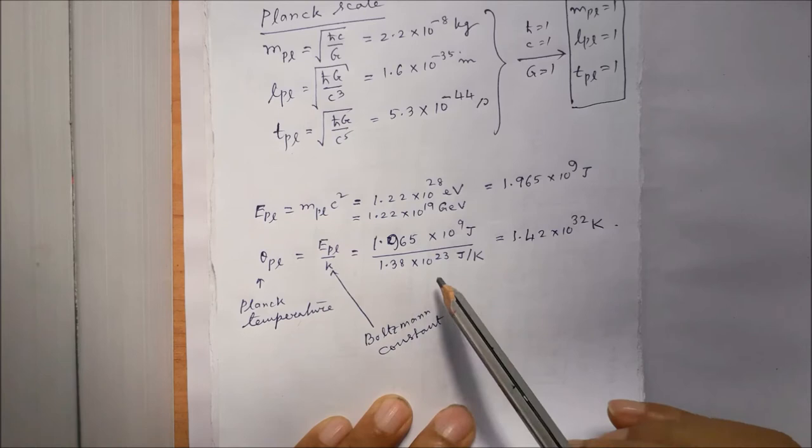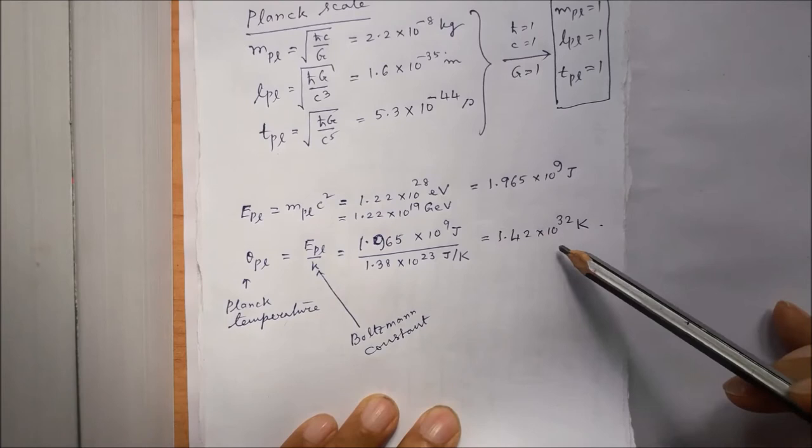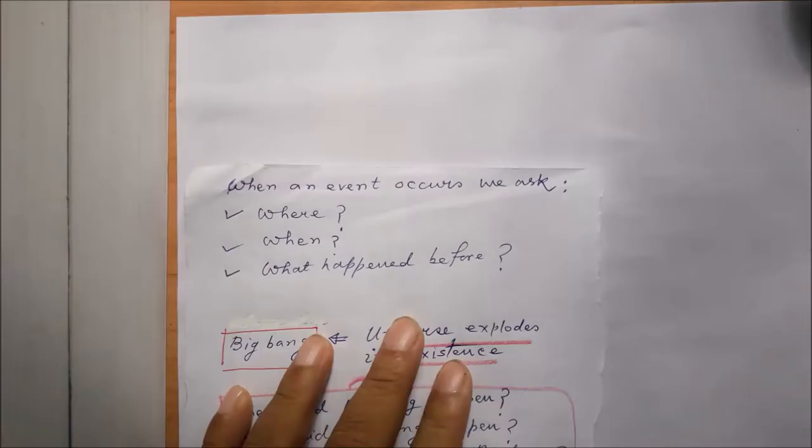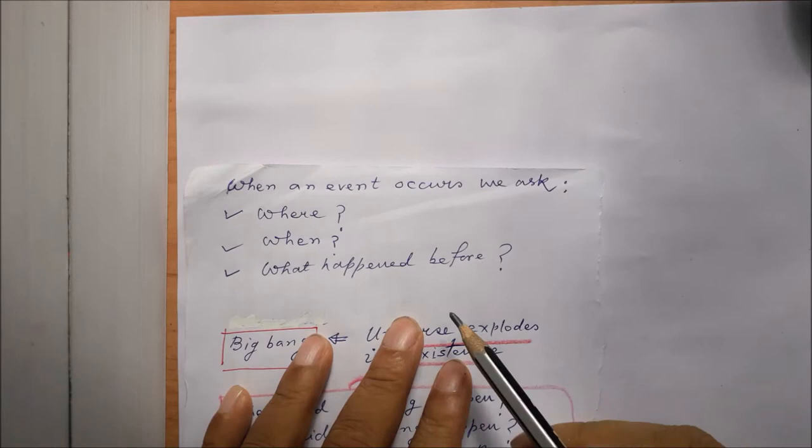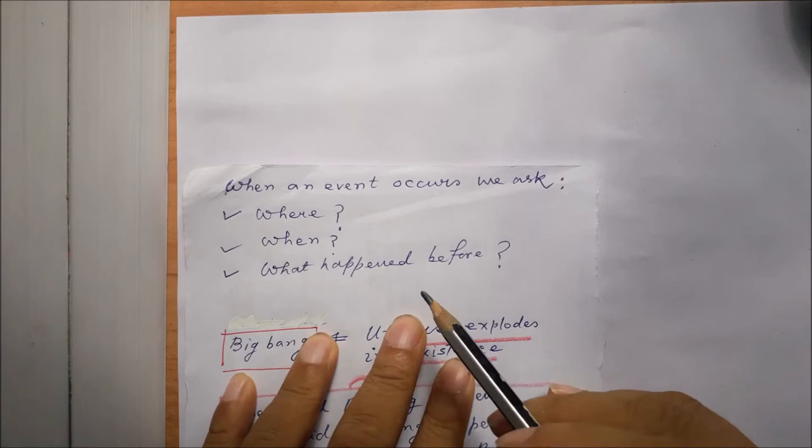From here we can also define the Planck temperature by taking the Planck energy and dividing by the Boltzmann constant, to end up with a huge value of temperature which is 10 raised to the power 32 Kelvin. Let us speak a few words again about the Planck era.